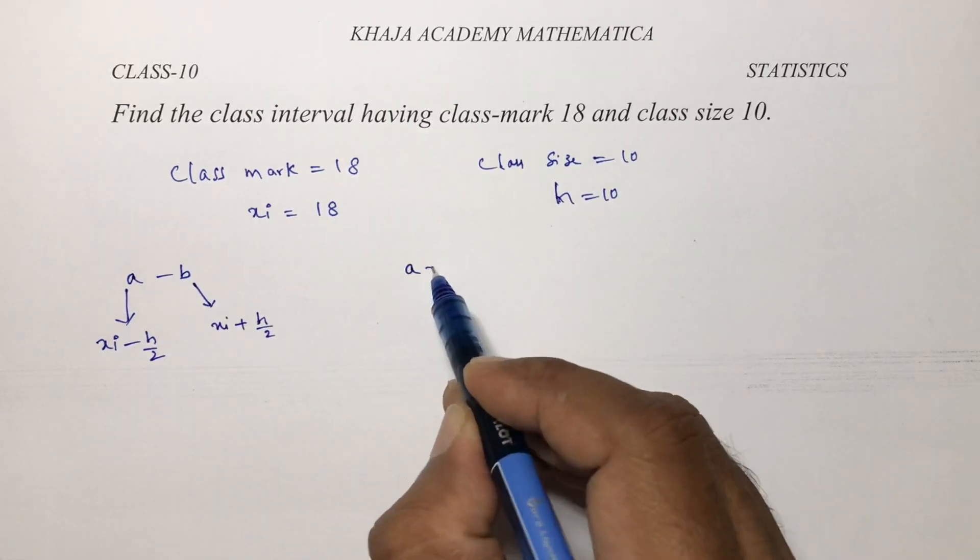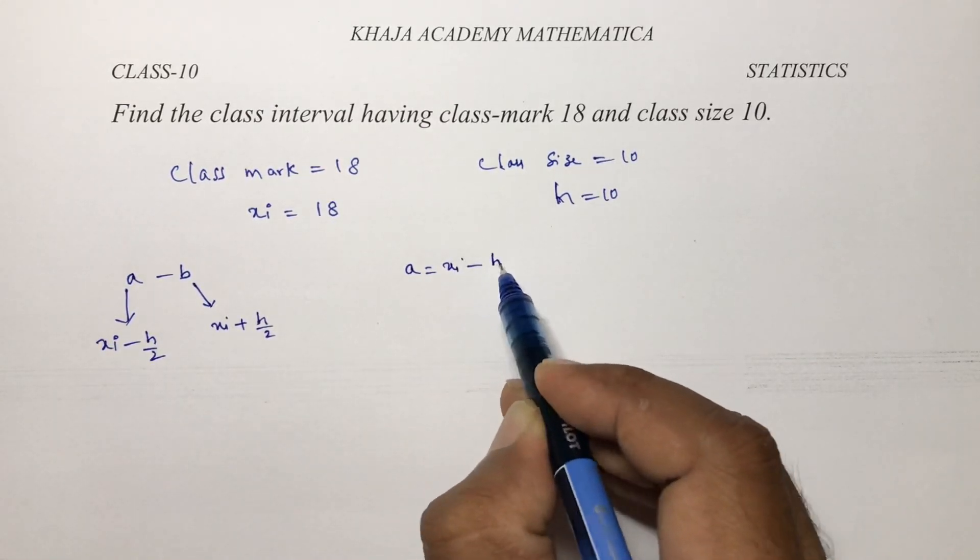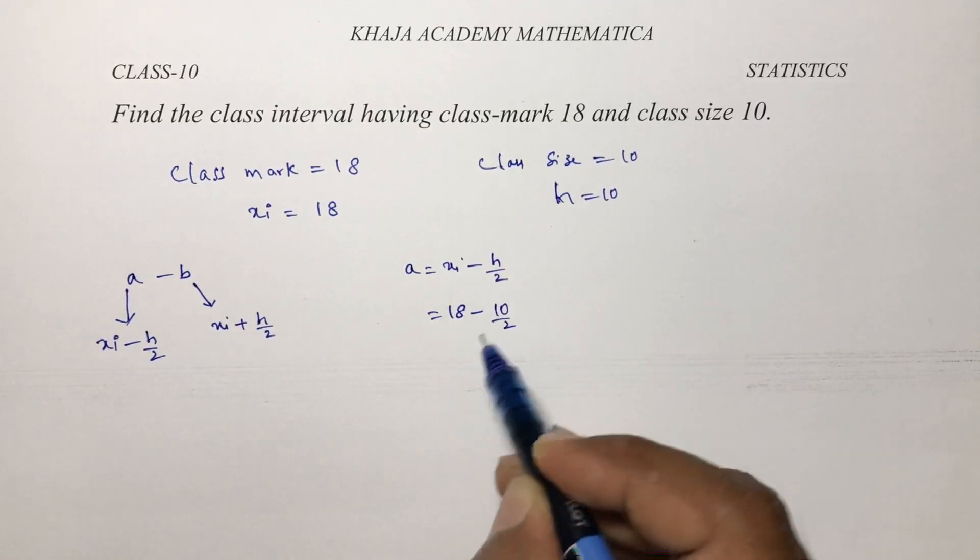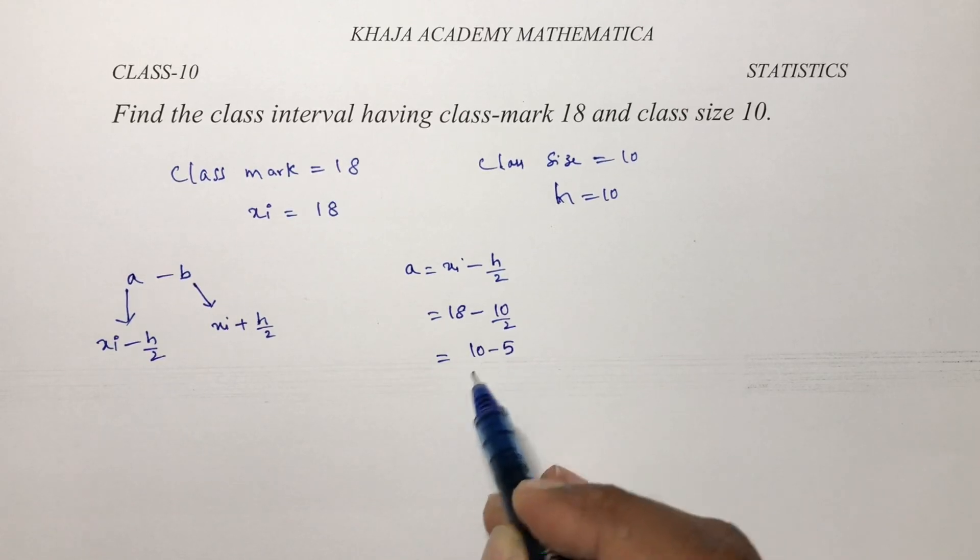a is nothing but xi minus class size by 2. Class mark is 18 minus 10 by 2, which is nothing but 18 minus 5, that is 13.